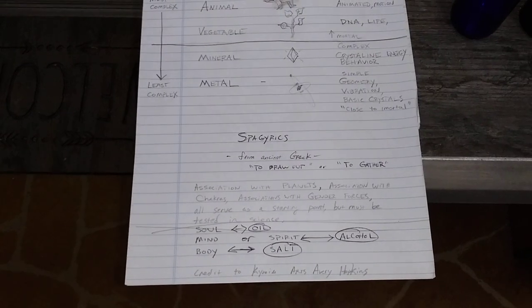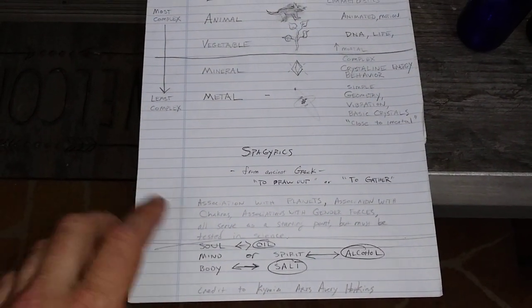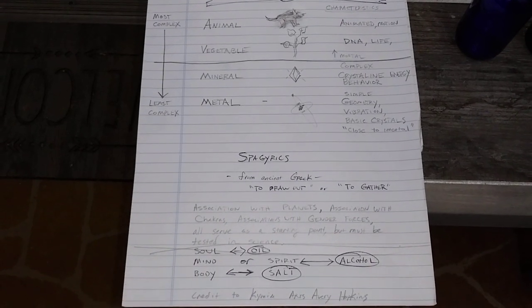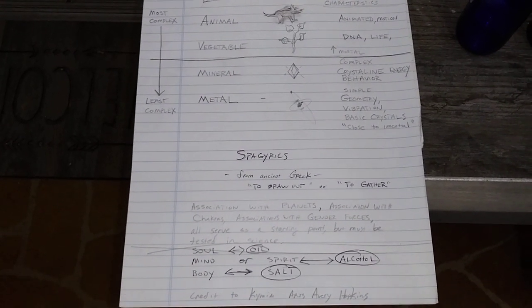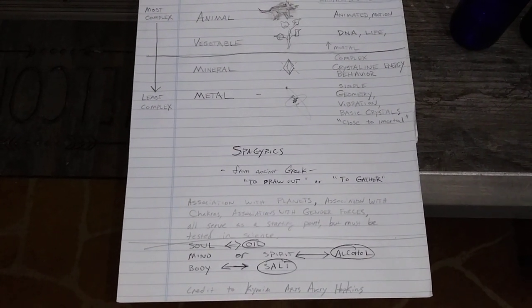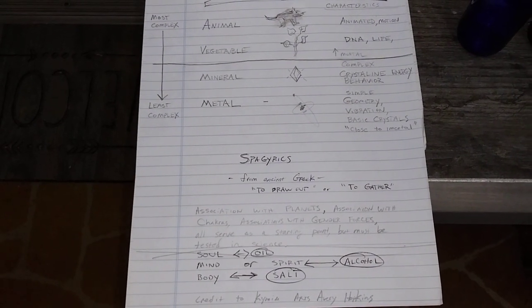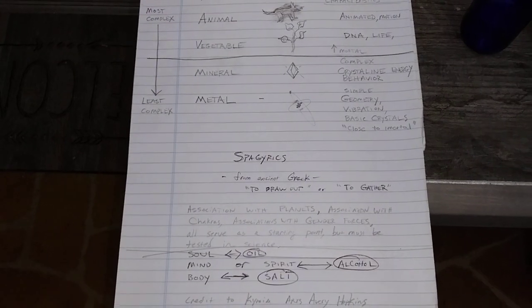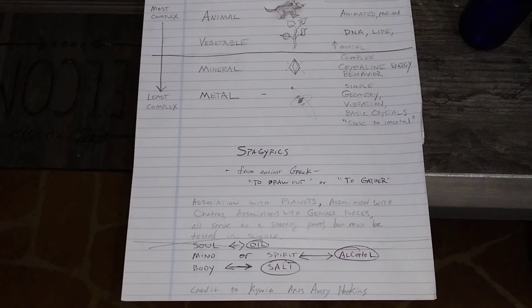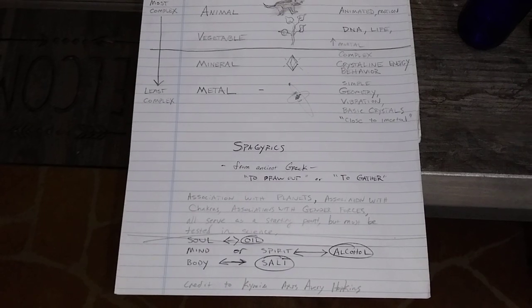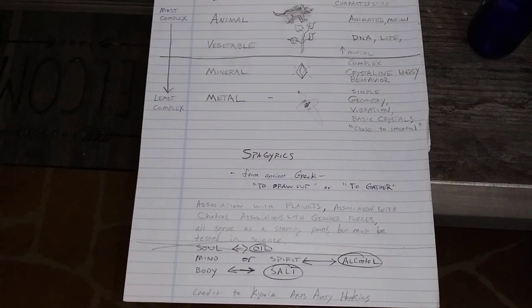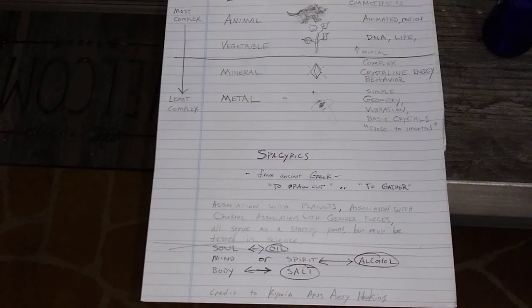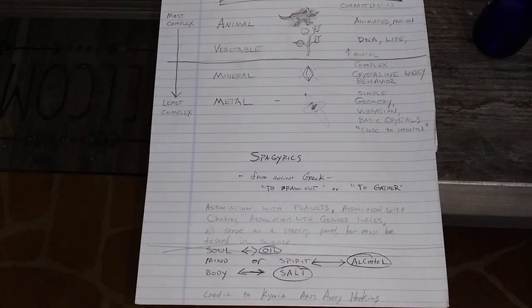In typical teachings, oils are associated with the soul; alcohols — which are also called spirits — are associated with the spirit or the mind; and salts and minerals are more associated with the body. That's not to say it has to be that way. For example, there are oils that are going to be beneficial to your body, and there are salts that are beneficial to your mind. So the link is just a starting point — it's not necessarily exact.